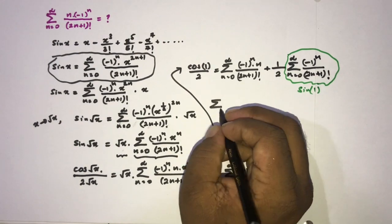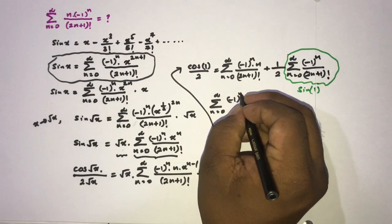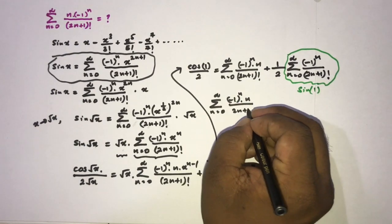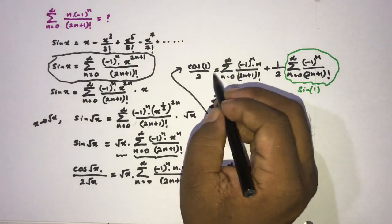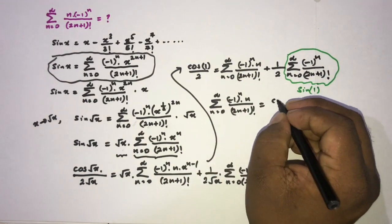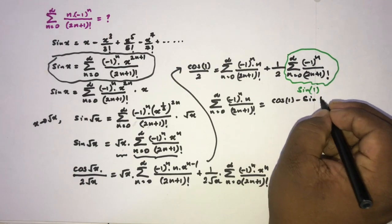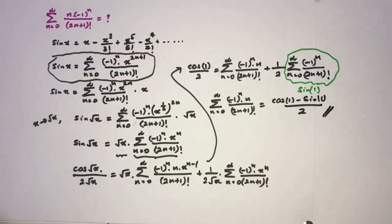So we can now isolate our target infinite series. The sum from zero to infinity of (-1)^n times n over (2n+1) factorial equals cos(1) over 2 minus sin(1) over 2, which is (cos(1) minus sin(1)) over 2. This is the answer. If you like this video, please subscribe to the channel. Thank you for watching.